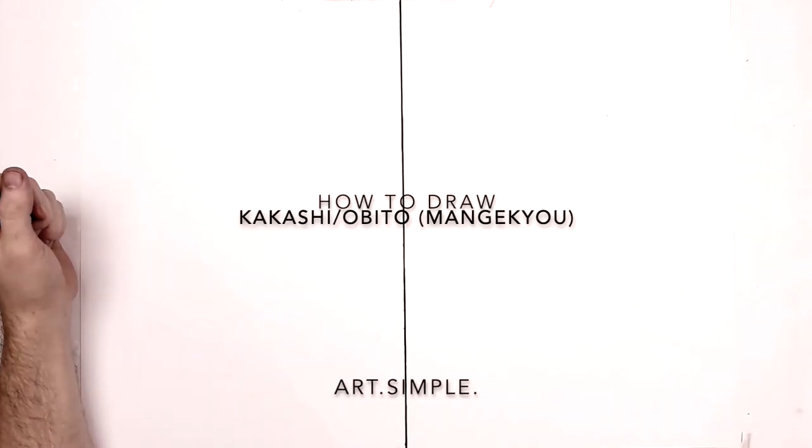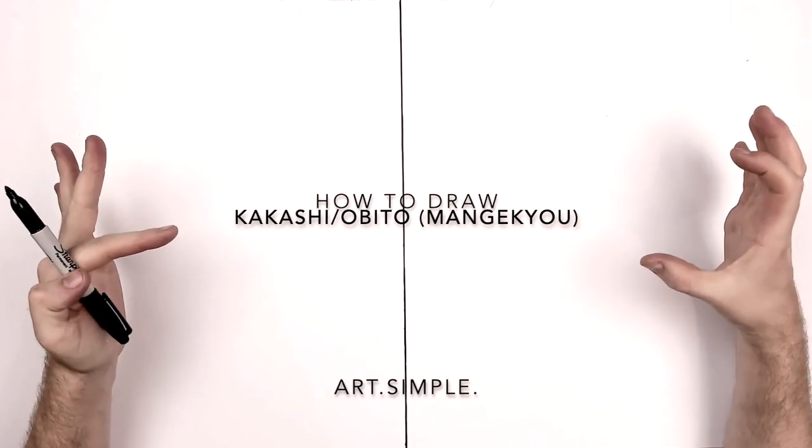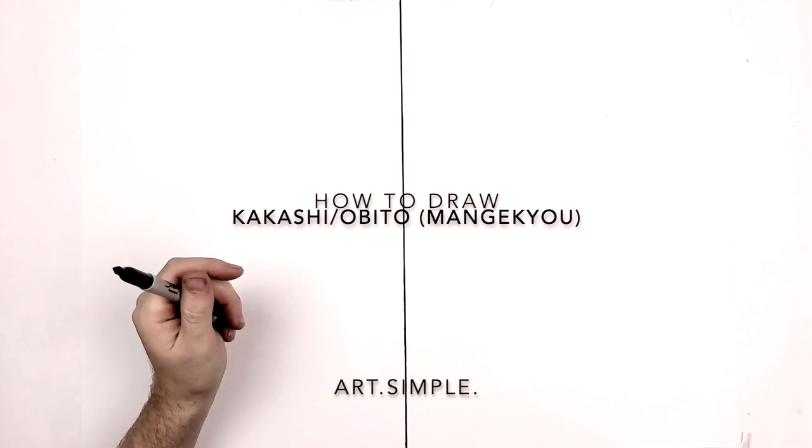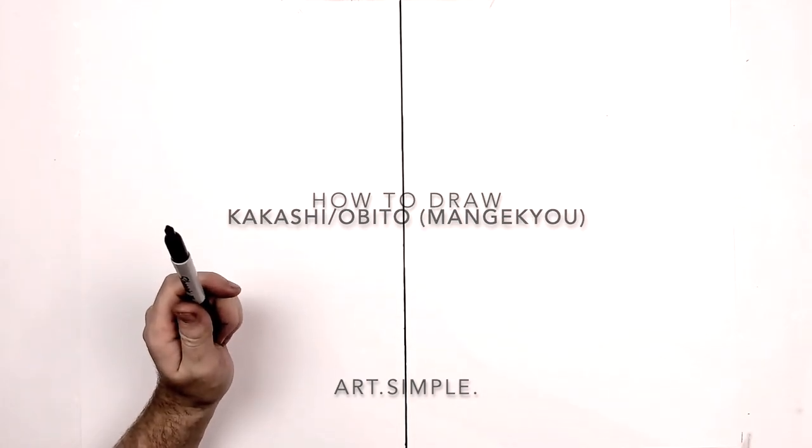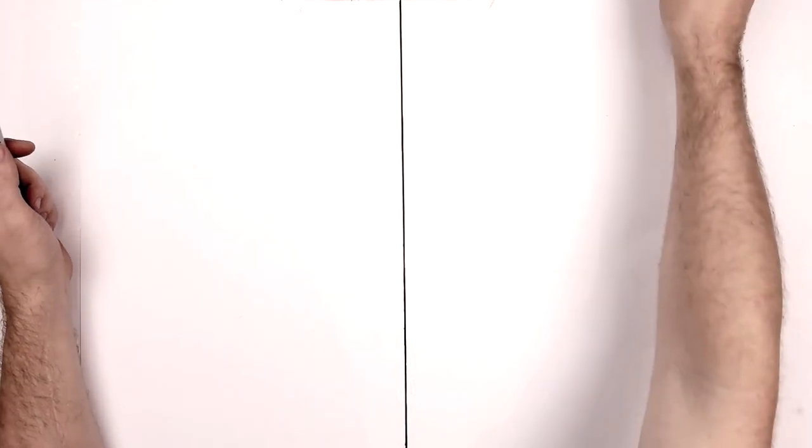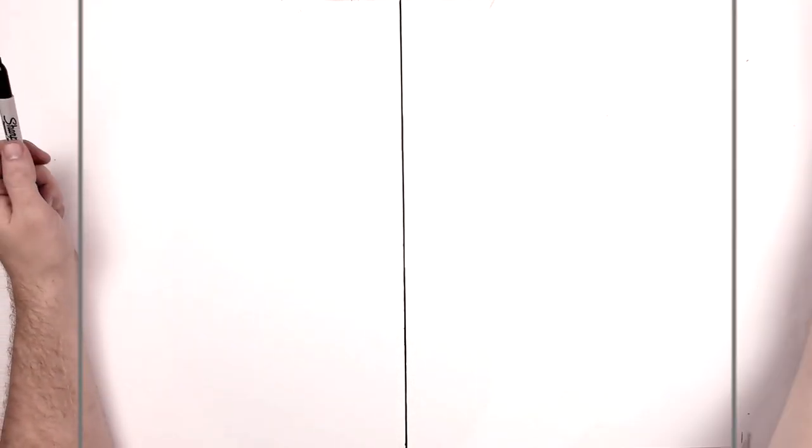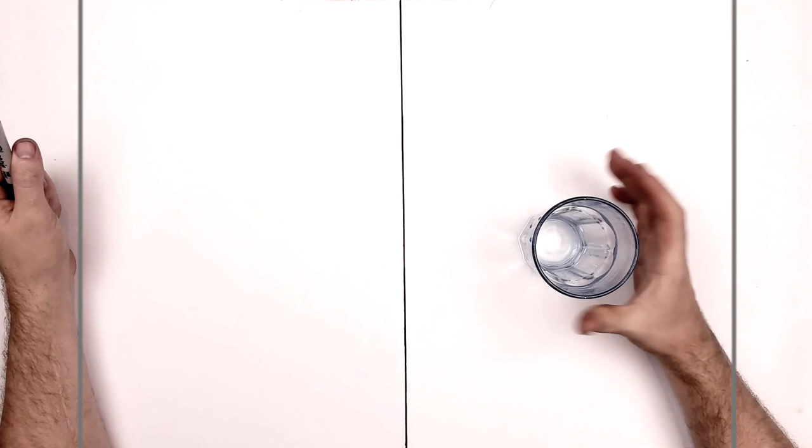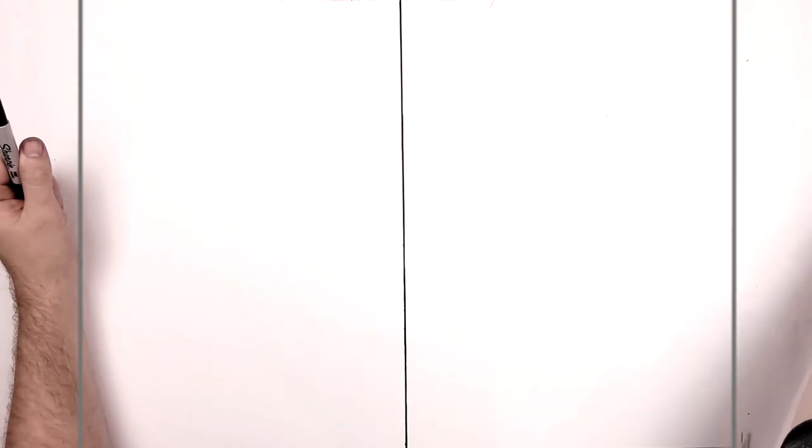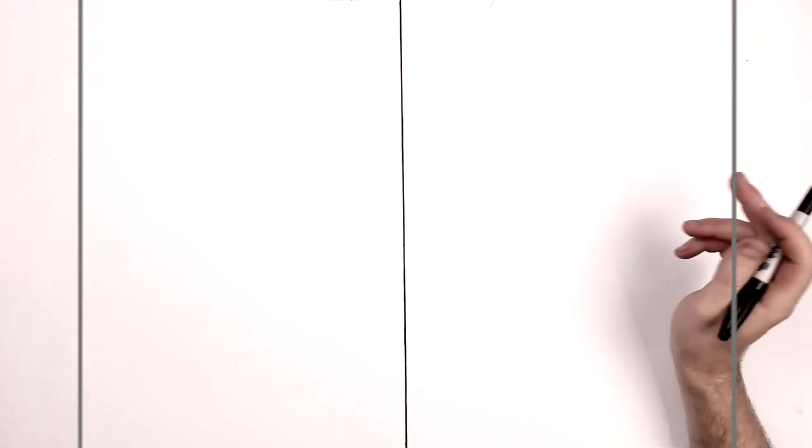What's up everybody, welcome back to another drawing tutorial. Today we are going to be doing Obito and Kakashi split when they awaken their Mangekyo Sharingan, a close up on both their eyes. Maybe something circular to draw around that's the right size for their eyes, the bottom of a cup or a glass or anything like that would help.